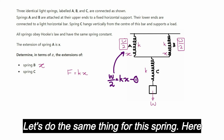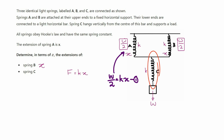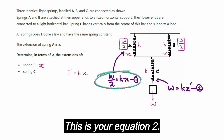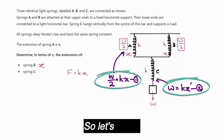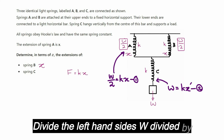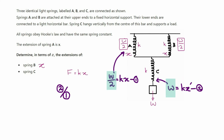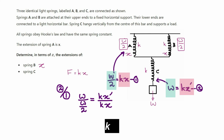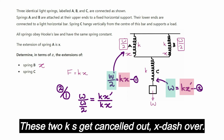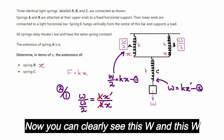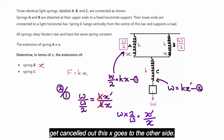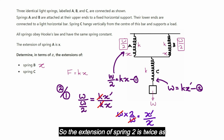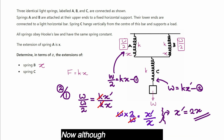To find the extension of spring C, use F equals kx. For spring A: force W/2, spring constant k, extension x — giving equation 1: W/2 equals k·x. For spring C: force W, spring constant k, extension x-dash — giving equation 2: W equals k·x-dash. Dividing equation 2 by equation 1: W divided by W/2 equals k·x-dash divided by k·x. The k's cancel, and solving gives x-dash equals 2x.